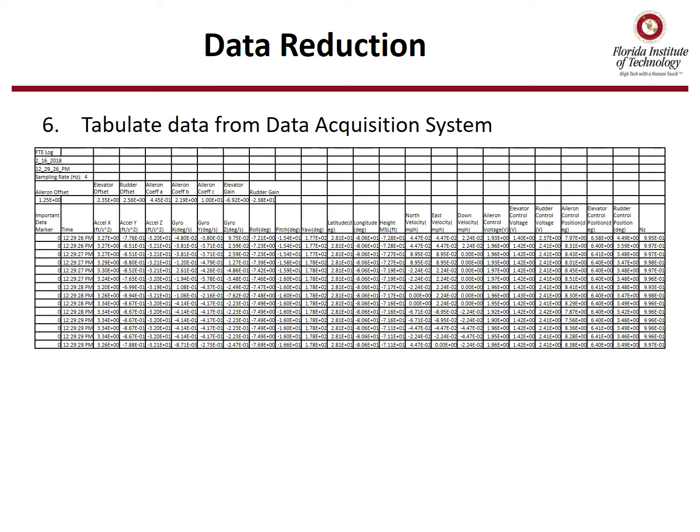Step six is to tabulate data from the data acquisition system, or the orange box. This should have been given to you in spreadsheet form as shown here. Step seven is to select columns to plot. To get a fugoid mode, you can look at either pitch, height, down velocity, or NZ. Either of those parameters will give you a sinusoidal output to calculate the damping ratio and natural frequency.